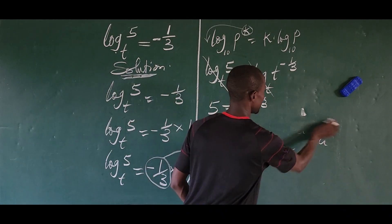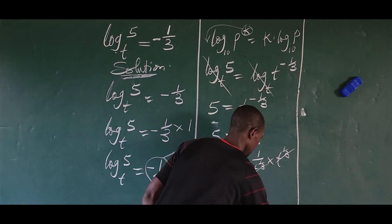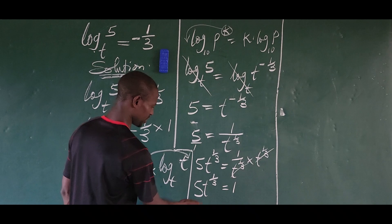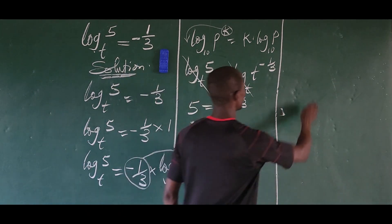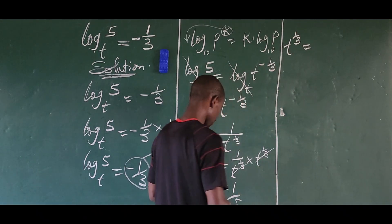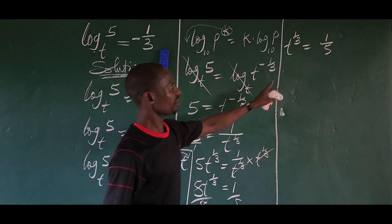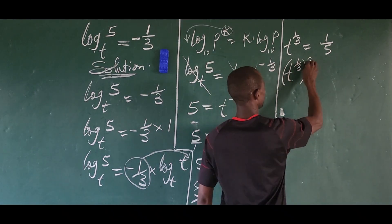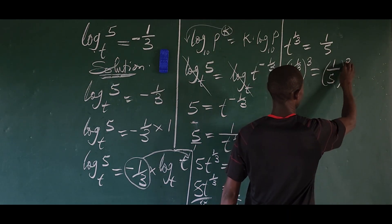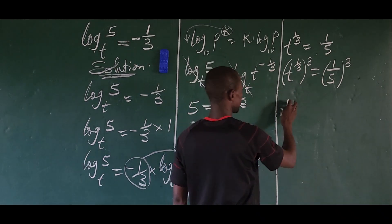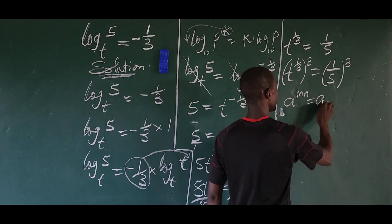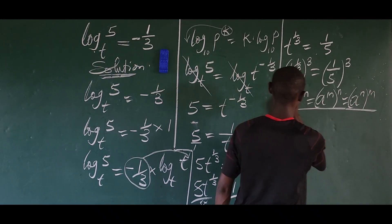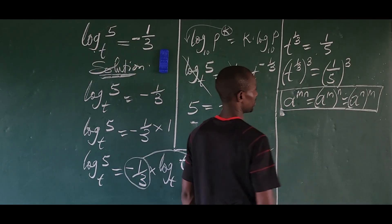We want to eliminate the negative exponent. We apply the law which says a to the power of minus m equals 1 over a to the power of m. So 5 equals 1 over t to the power of 1 over 3. We then multiply both sides by t to the power of 1 over 3, giving us: 5 times t to the power of 1 over 3 equals 1. Now we divide both sides by 5, so t to the power of 1 over 3 equals 1 over 5.